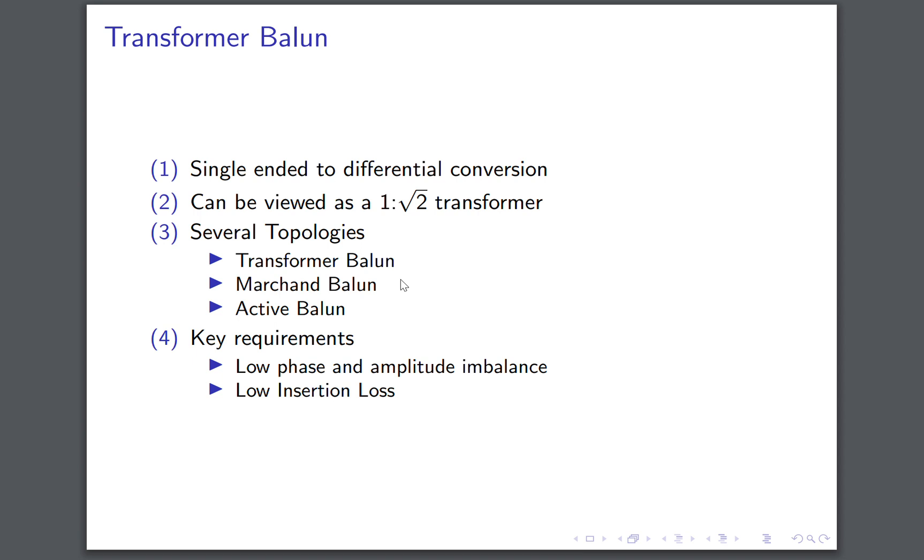The key requirements of a balun are typically: you should have low phase and amplitude imbalance between the 0 and 180 degree output signals. The output could also be the input and vice versa. You need to have a low insertion loss. Typical insertion loss of baluns range in 1 to 2 dB at RF, and you would also need a wide band performance.